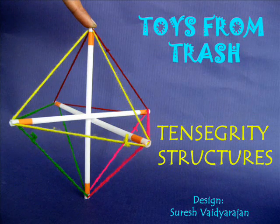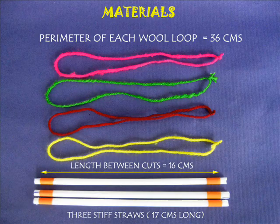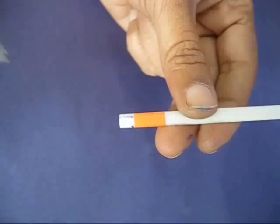Tensegrity structures are so interesting because you can make them with the simplest materials. We require three stiff straws and four loops of wool.